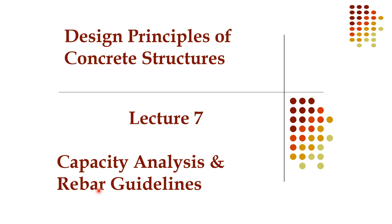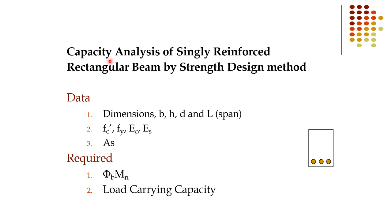In this course on Design Principles of Concrete Structures, Lecture 7 covers capacity analysis and rebar (reinforcement) guidelines. We will look at capacity analysis of a singly reinforced rectangular beam by the strength design method, meaning the ultimate strength design method.